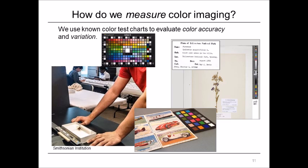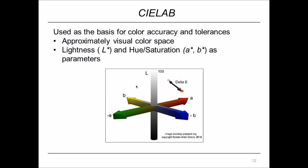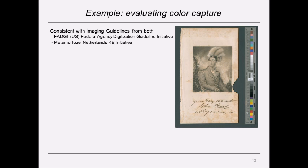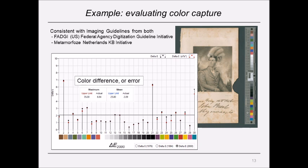For institutions where color information and imaging needs to be traceable to the object, we use color test charts to evaluate color accuracy and its variation. We see a couple of examples here where we're using color targets alongside the collection items to be imaged. An important color description is provided by CIELAB, which is used as a basis for color accuracy measurements and tolerances — it's an approximately uniform visual color space.